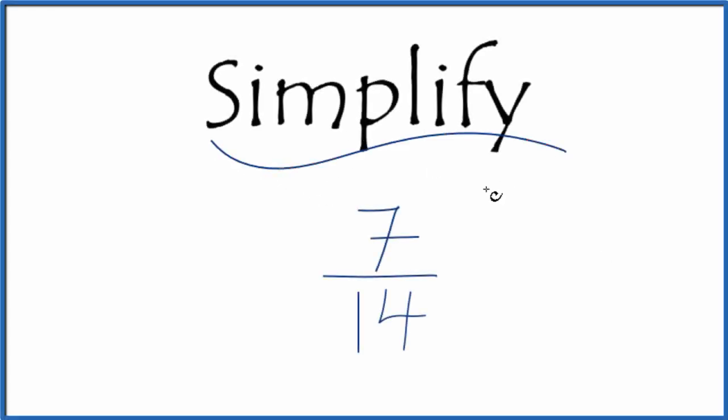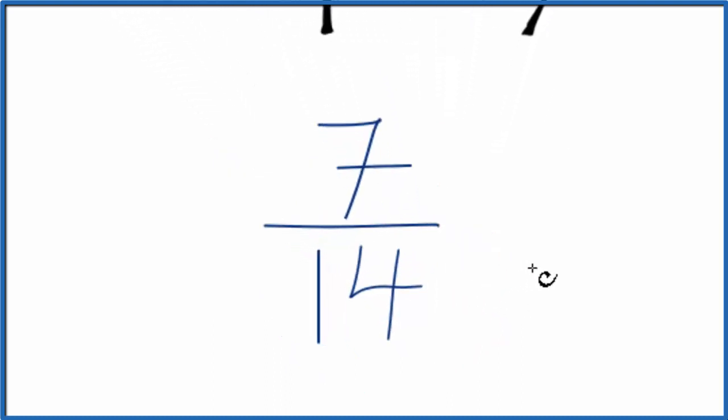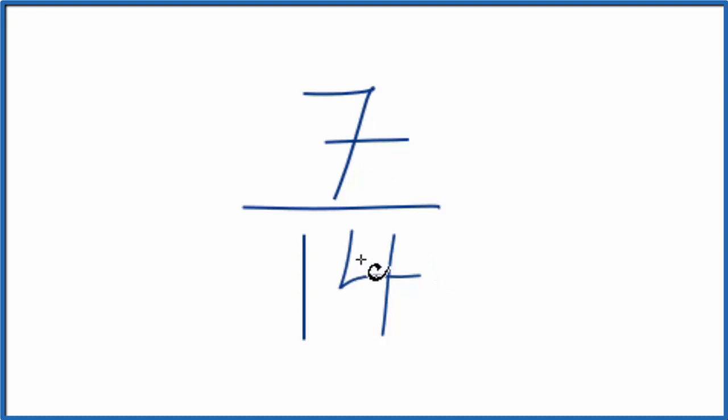All right, let's simplify the fraction 7/14. So what we're really trying to do is find another fraction that's equivalent. It has the same value as 7 over 14, but it's in lowest terms.